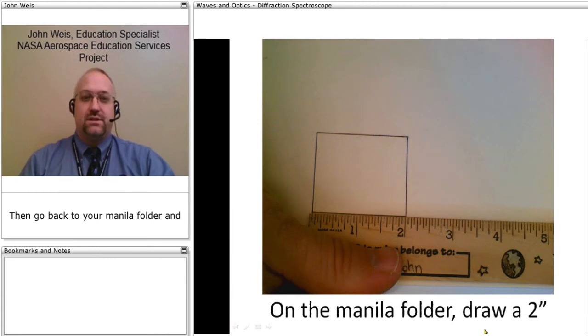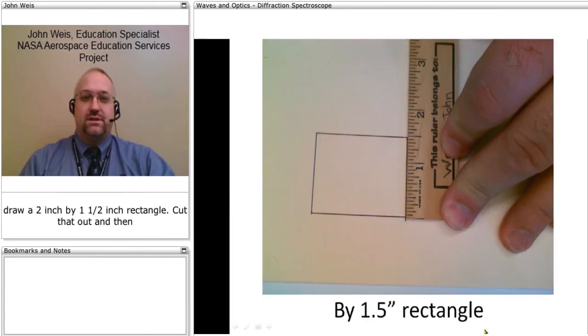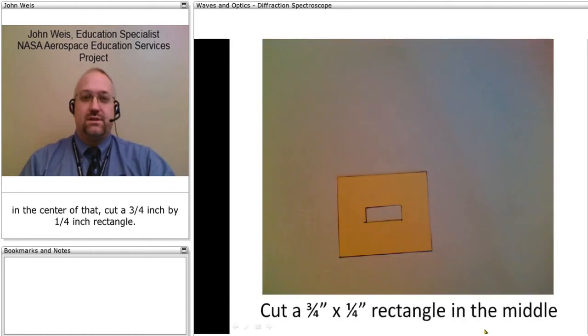Then go back to your manila folder and draw a 2 inch by 1 1⁄2 inch rectangle. Cut that out, and then in the center of that, cut a 3 quarter inch by 1 quarter inch rectangle. This is your viewing mask for your thin slit.